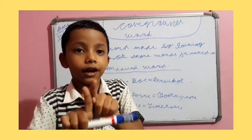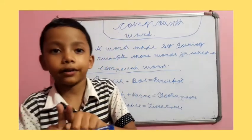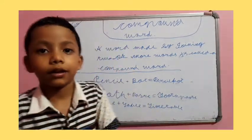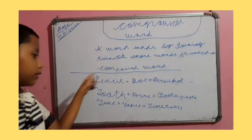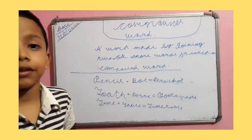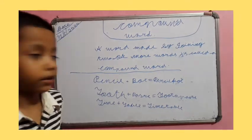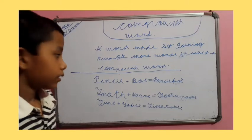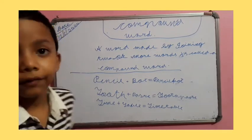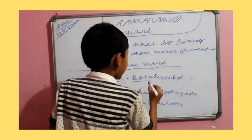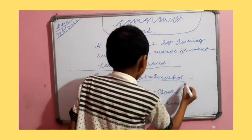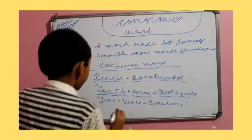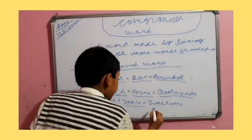These are our examples. Now you can see from here there are so many of them. Pencil plus box equals pencil box, tooth plus paste equals toothpaste, and time plus table equals timetable.